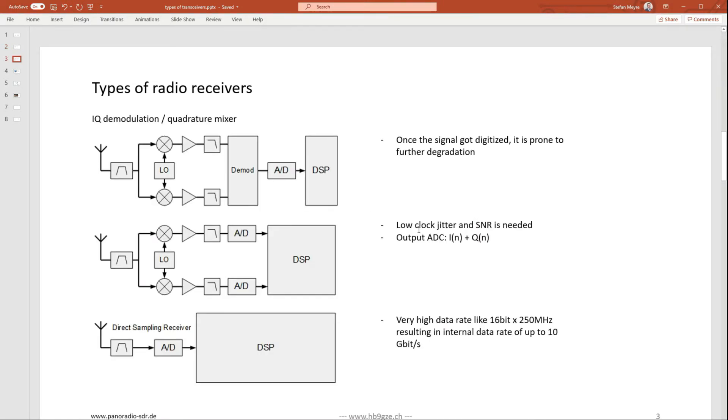And also more and more you see this IQ demodulation quadrature mixer approaches. That's the modern stuff. And this is only possible since these AD converters get really fast, since DSPs and ASICs and FPGAs are capable of handling all the extreme data volume that you get here and process it digitally.